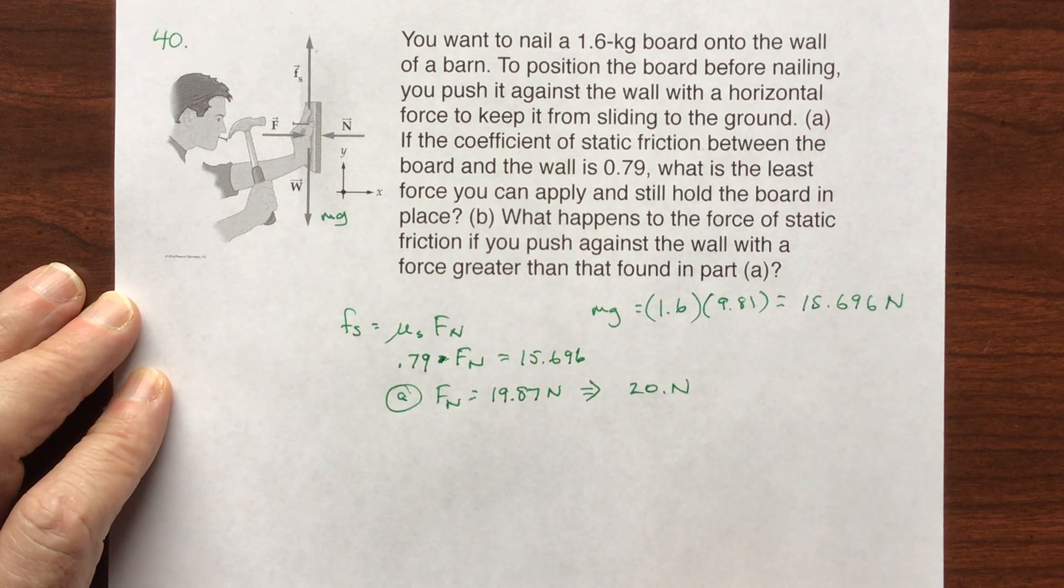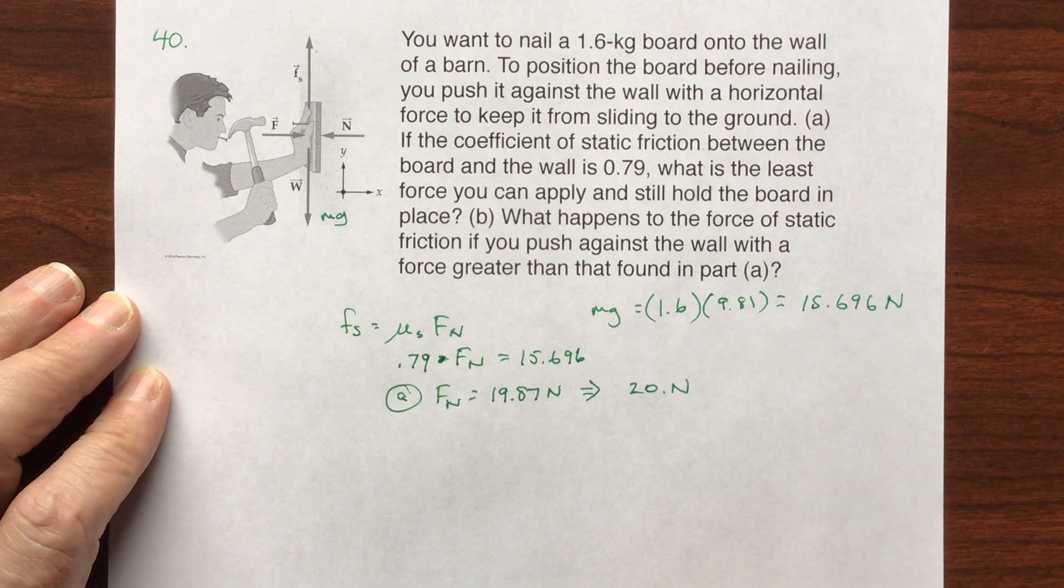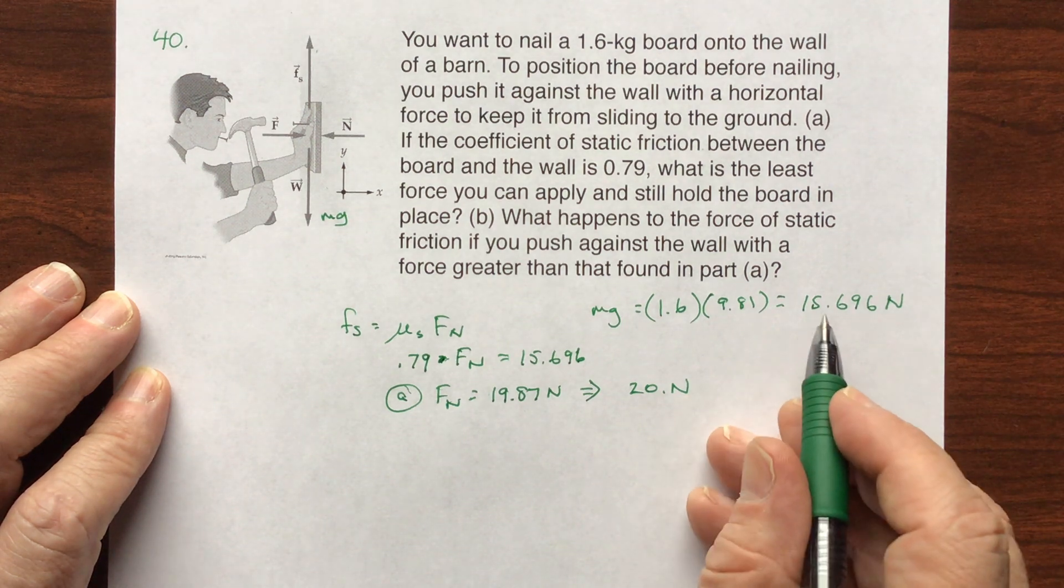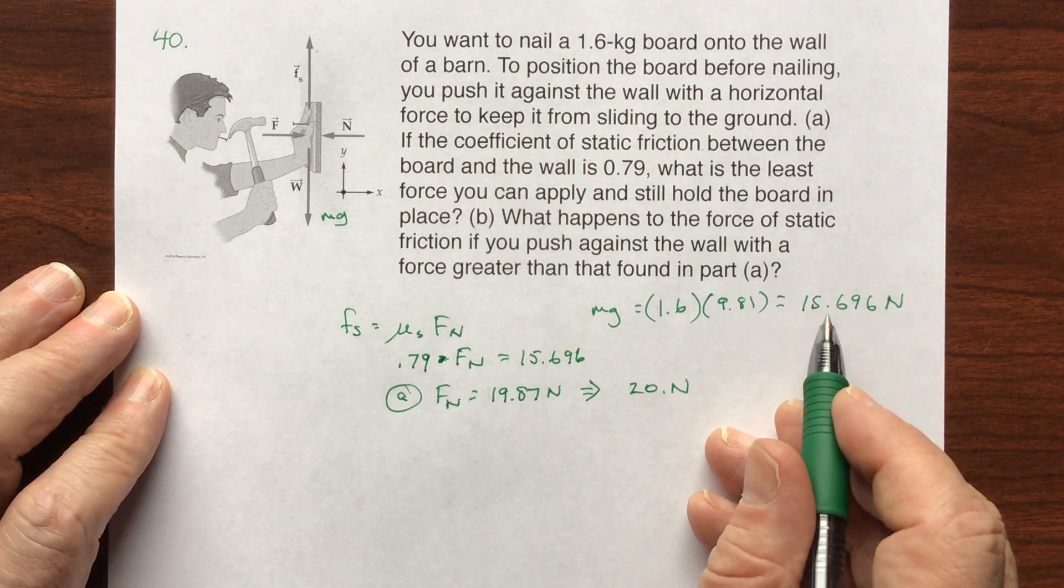What does part B say? What happens to the force of static friction if you push against the wall with a force greater? This force is barely holding it. What if you push harder?